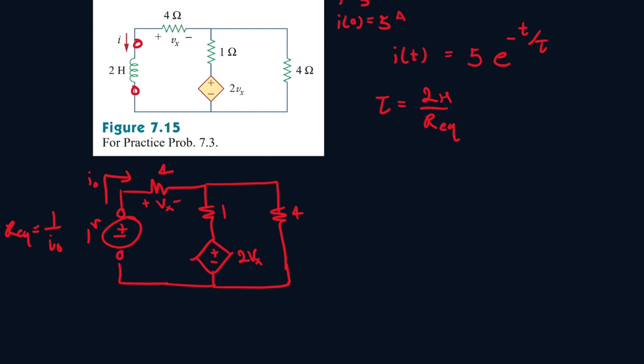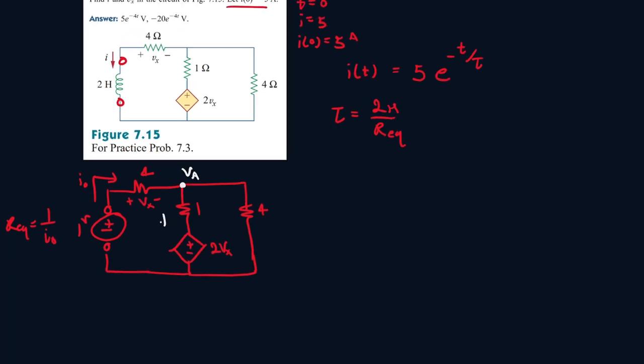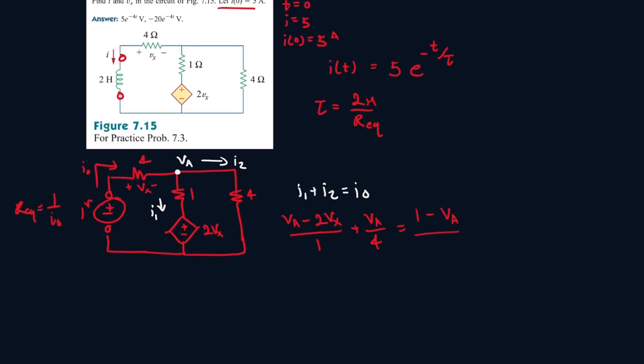So let's do a node analysis. So let's call this node VA. So let's have a current moving in this direction, call it I1, and a current moving in this direction, call it I2. So I1 plus I2 will be equal to IO. So it will be VA minus 2Vx all over 1 plus VA minus 0 all over 4 equals IO, which will be 1 minus VA over 4.